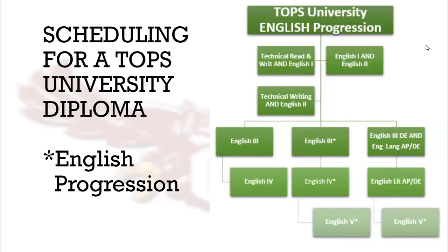The first progression we'll look at is the TOPS University English progression. For those students who came into 9th grade with English 1 Part 1 from 8th grade, they have taken English 1 and English 2 at the 9th grade level. Those students who came without any English courses took Technical Reading and Writing in English 1 in the 9th grade. Depending on which courses you took will determine which courses you take in 10th grade.